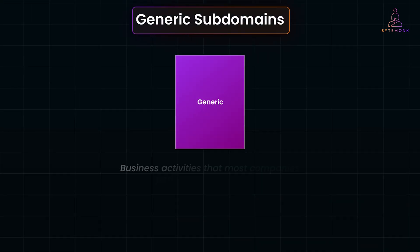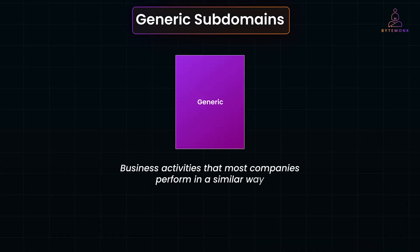Generic subdomains are business activities that most companies perform in a similar way. While they can be complex to implement, they don't offer a competitive advantage. Instead of innovating, companies typically rely on proven, widely available solutions. For example, user authentication is a generic subdomain — most companies use established frameworks for reliability and security rather than creating their own.